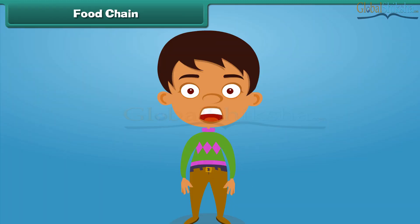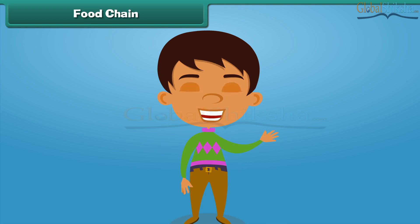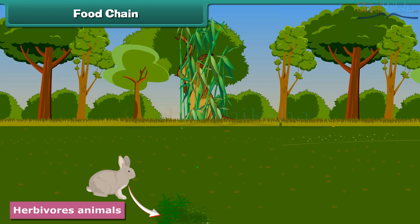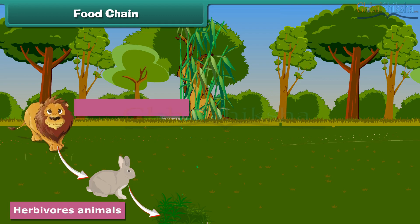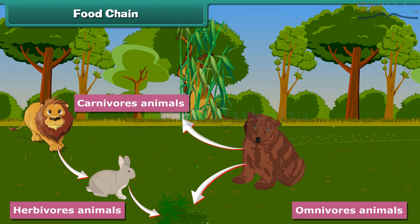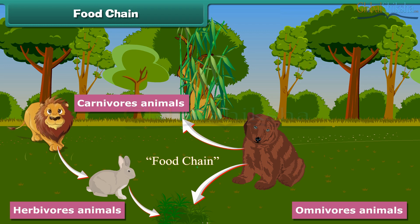Friends, do you know that all animals are connected to each other? They are all dependent on one another for food. Herbivores eat plants to get nutrition. Carnivores eat the flesh of herbivores, while omnivores eat both herbivores and carnivores. A food chain is the sequence of who eats whom to obtain nutrition. For example, a rabbit eats grass and a lion eats the rabbit. A bear can eat both.